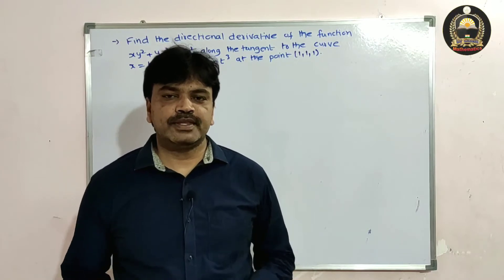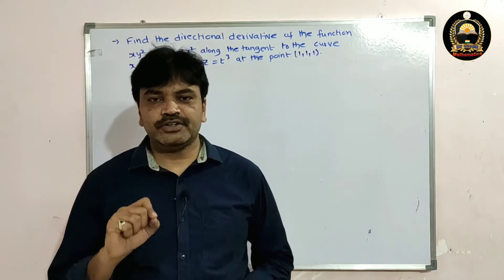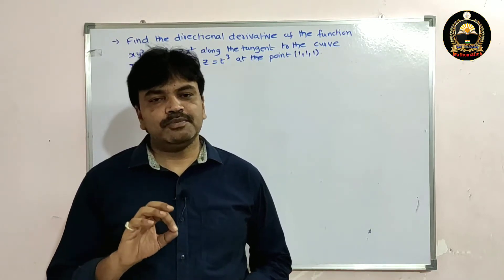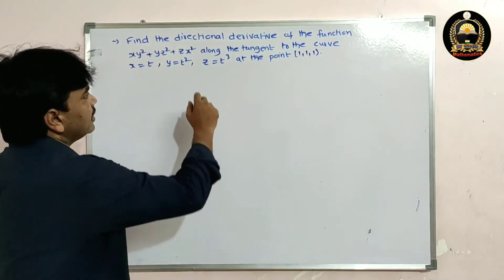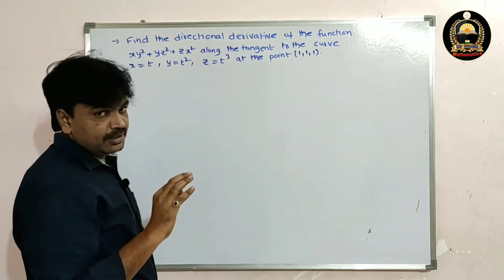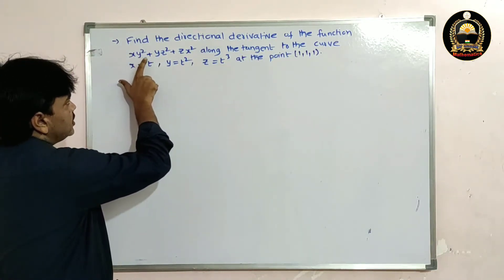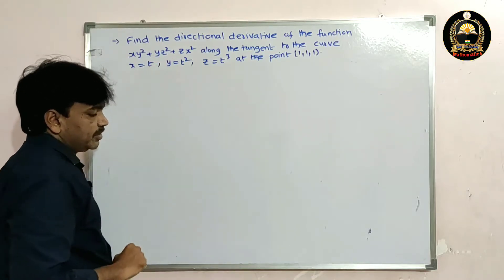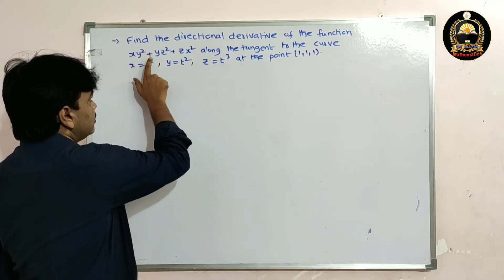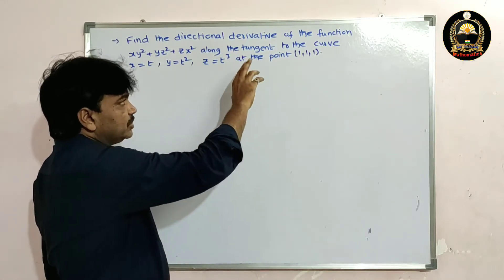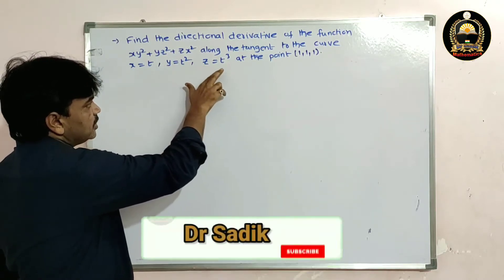Good morning friends. In this lecture I'm going to solve a problem on directional derivative. Find the directional derivative of the function φ = xy² + yz² + zx² along the tangent to the curve x = t, y = t², z = t³.